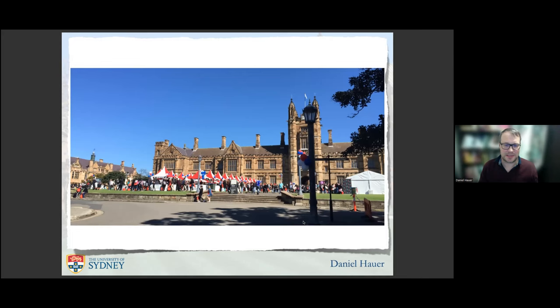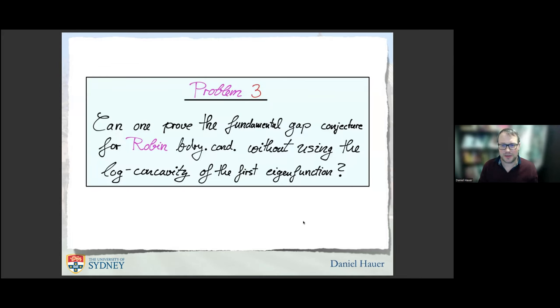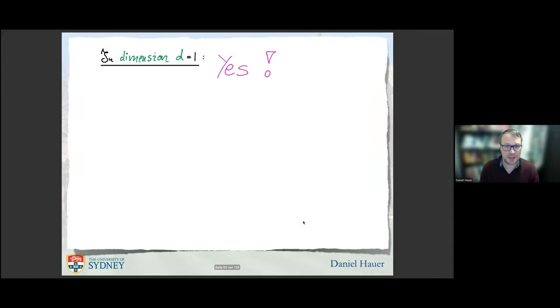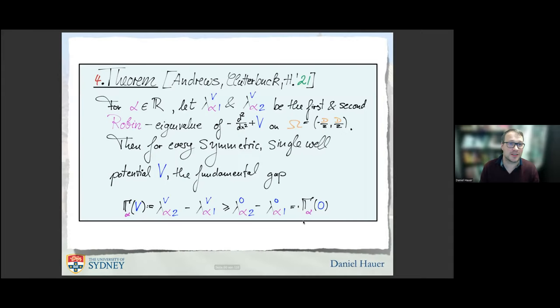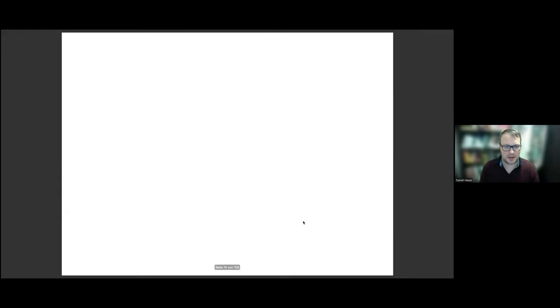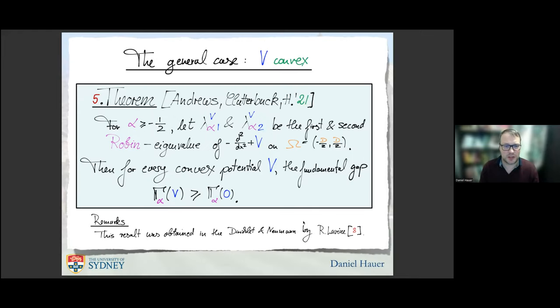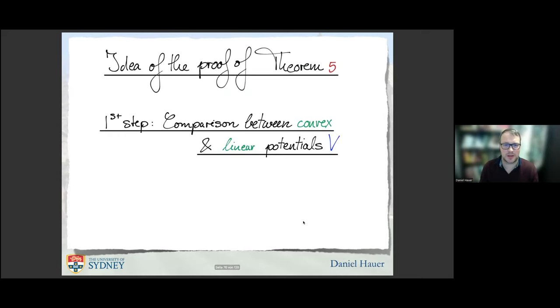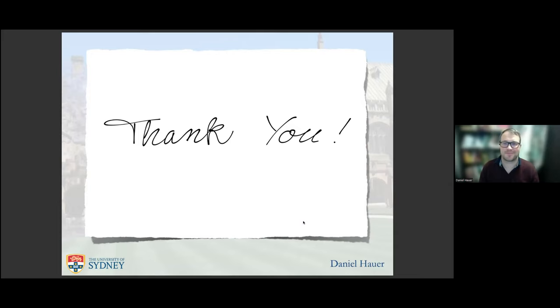Now it is the natural question whether one can prove the fundamental gap conjecture with Robin boundary condition without using log-concavity. The answer is yes, in dimension one you can do it, and we did it. We did it not only for single-well, we did it also for general convex potentials. We proved the fundamental gap conjecture in dimension one. Thank you for listening.